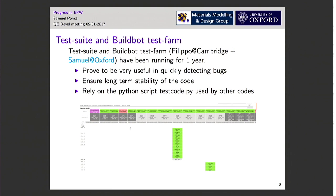The third item is the test suite and Buildbot test farm. At the moment there is a test suite in Quantum ESPRESSO that mainly consists of PW, CP, and EPW tests. Those tests are run nightly by a Buildbot test farm. At the moment there are two test farms: one run by Filippo in Cambridge and one run by me in Oxford. They have been running for over a year and have been very helpful.